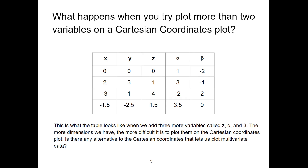When the point has more than two variables, we are no longer able to perceive and understand the point's variables on the Cartesian coordinate easily. The more variables you try to plot on the Cartesian coordinates, it quickly becomes infeasible.